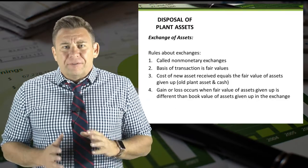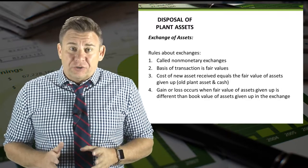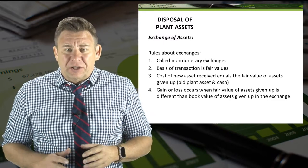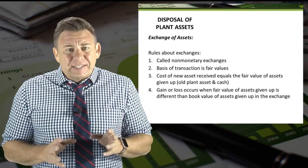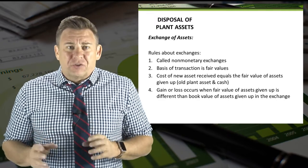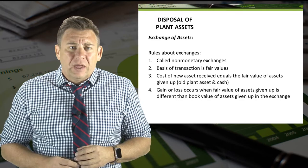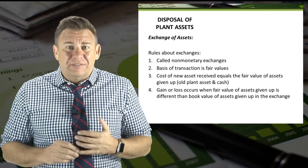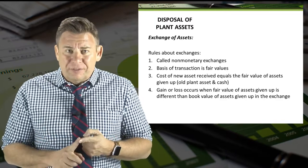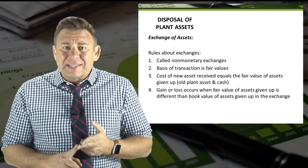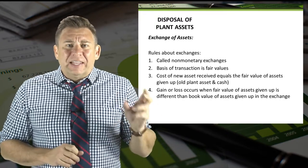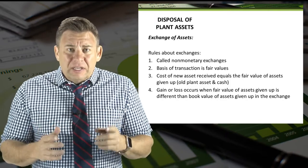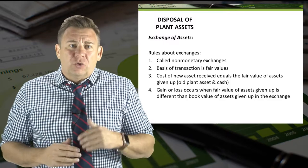Let me go over a few of the rules that guide us in recording journal entries for the exchange of assets. To begin with, they are commonly called non-monetary exchanges. The basis for the amounts recorded in the transaction is fair market values. Assets are recorded at their costs, and the cost of a new plant asset received is equal to the fair value of the old asset given up plus any cash paid. Finally, gains or losses occur when the fair value of what we give up is different than the book value of the assets given up.